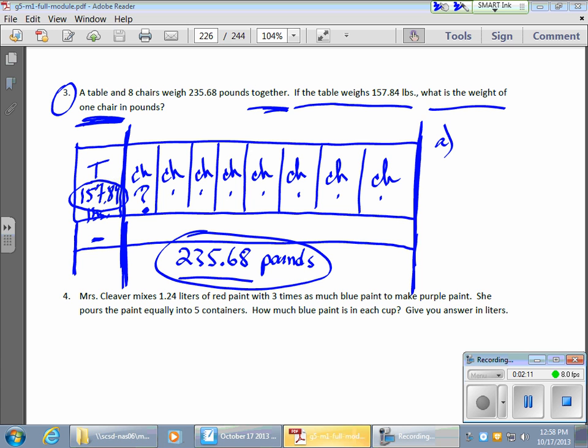So I'm going to take my 235.68 and I'm going to subtract my 157.84. And if I do that, I have a 4, I need to borrow, I have an 8, I have a decimal, I have a 2, I need to borrow again, gives me a 7 here, there's a 1, there's a 12, there's another 7. And so I have 77.84 pounds.